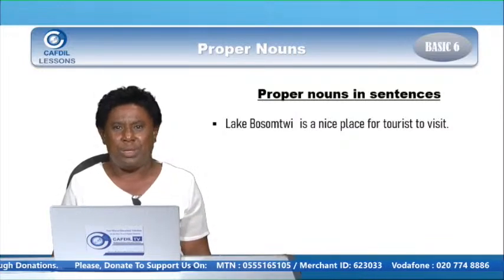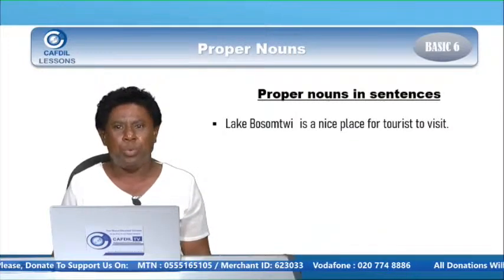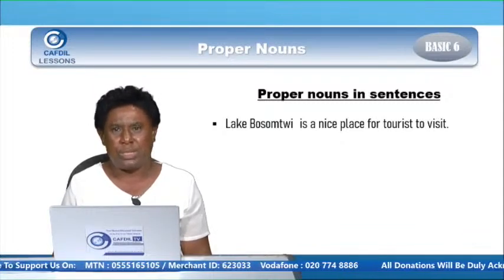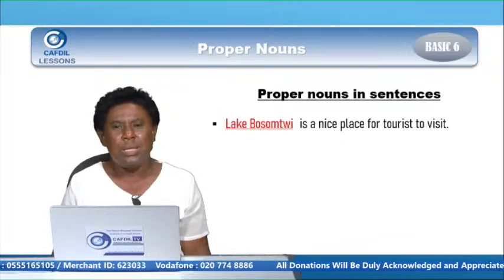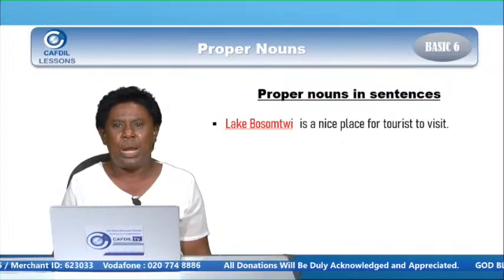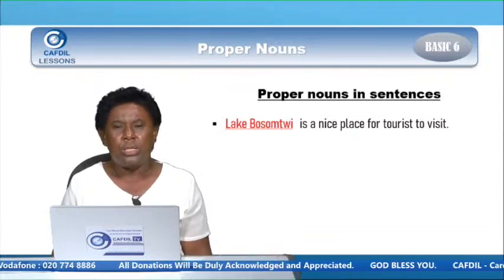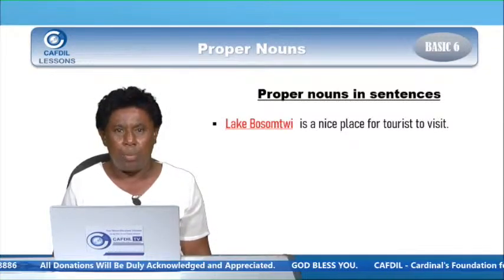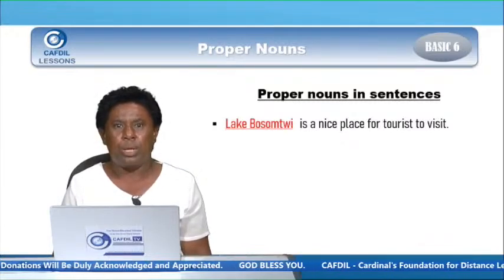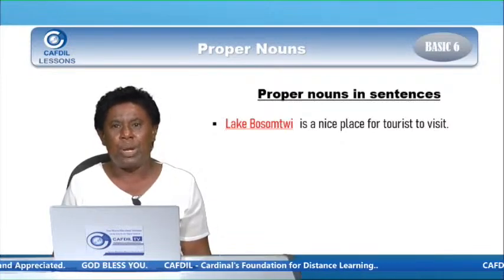Now you can read with me: Lake Bosomtwe is a nice place for tourists to visit. Let's see where we can find the proper noun. Lake Bosomtwe — because it's a proper noun, it begins with capital letters: Lake — capital L, and Bosomtwe — capital B. And it begins the sentence, and it's a proper noun.